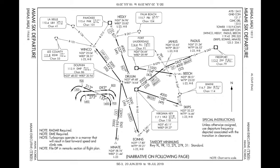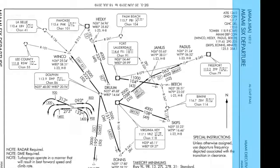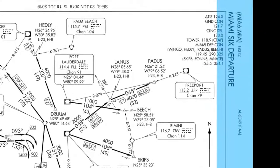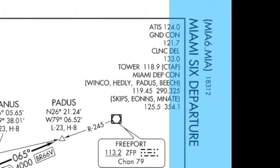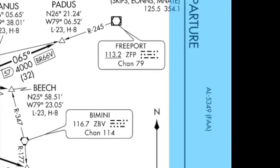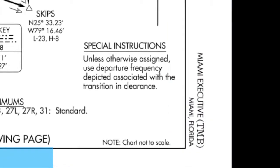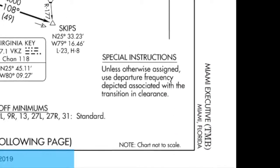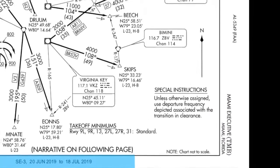We were cleared for the Miami 6 departure at KTMB Miami Executive. The chart is within dates — June 20th, 2019 is the expiration — so we're all good.